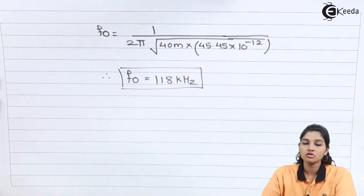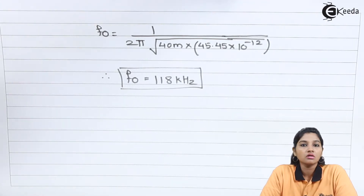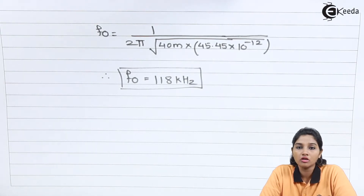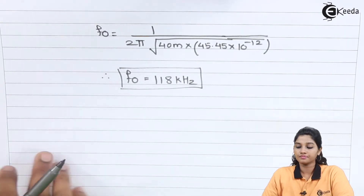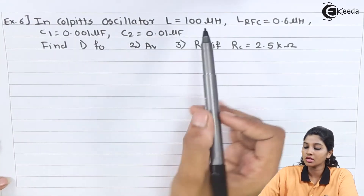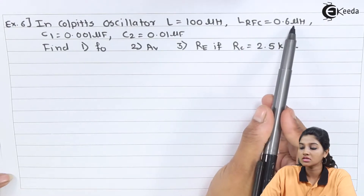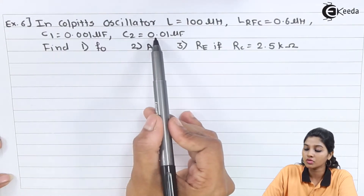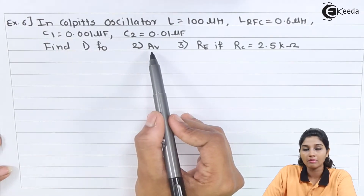This is the new frequency of oscillation with the new capacitor value. In this way we can find output voltage, feedback voltage, and frequency of oscillation based on given parameters. Now let's move to Problem 2: In a Colpitts oscillator, L = 100 µH, L_RFC = 0.6 µH, C1 = 0.001 µF, C2 = 0.01 µF.